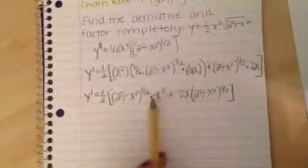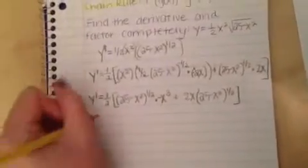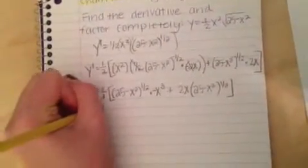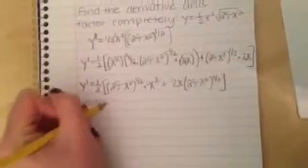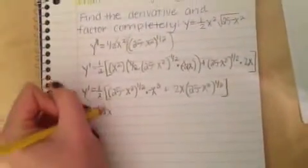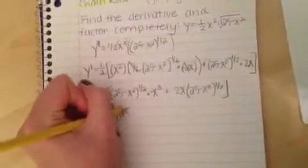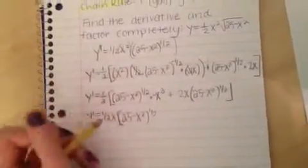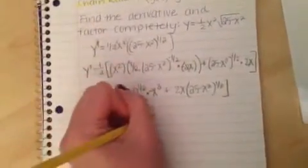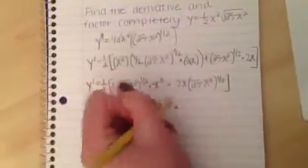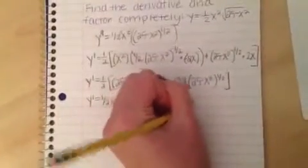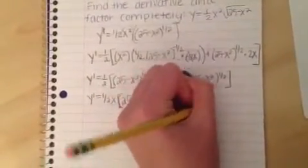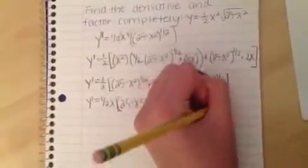And now since there's x's here, we need to... we'll just bring that out to the front. So y prime equals half x, 25 minus x squared to the half. We got rid of one of these x's, so that turned into times negative x squared, plus get rid of this x, so 2, 25 minus x squared to the half.